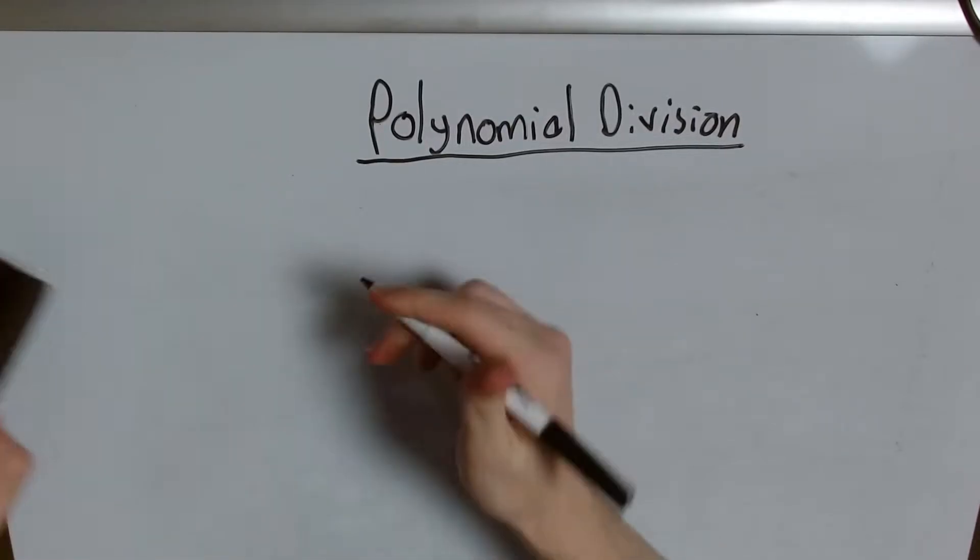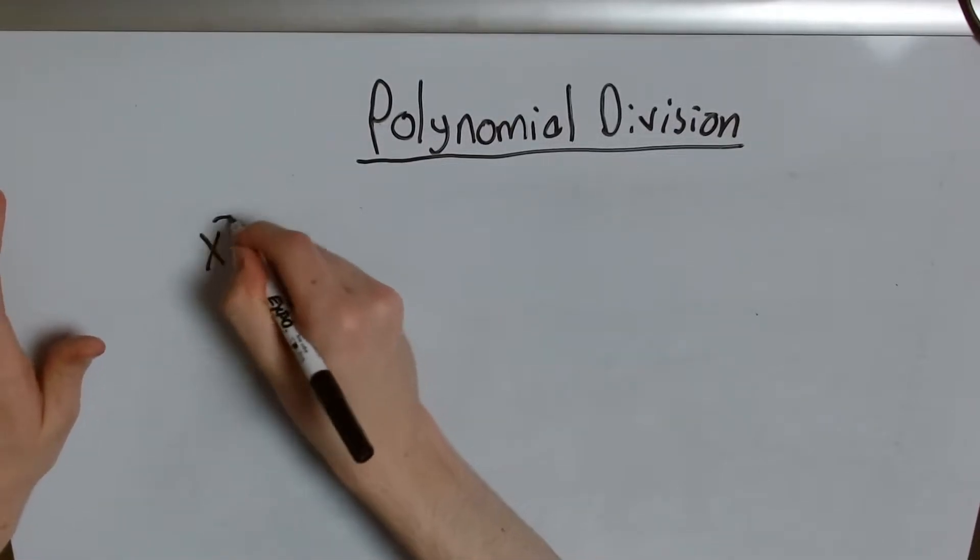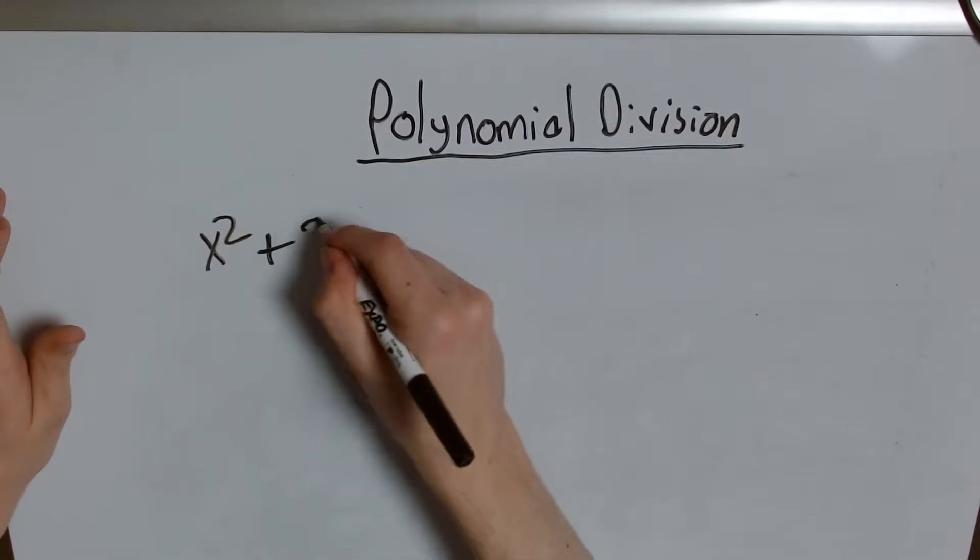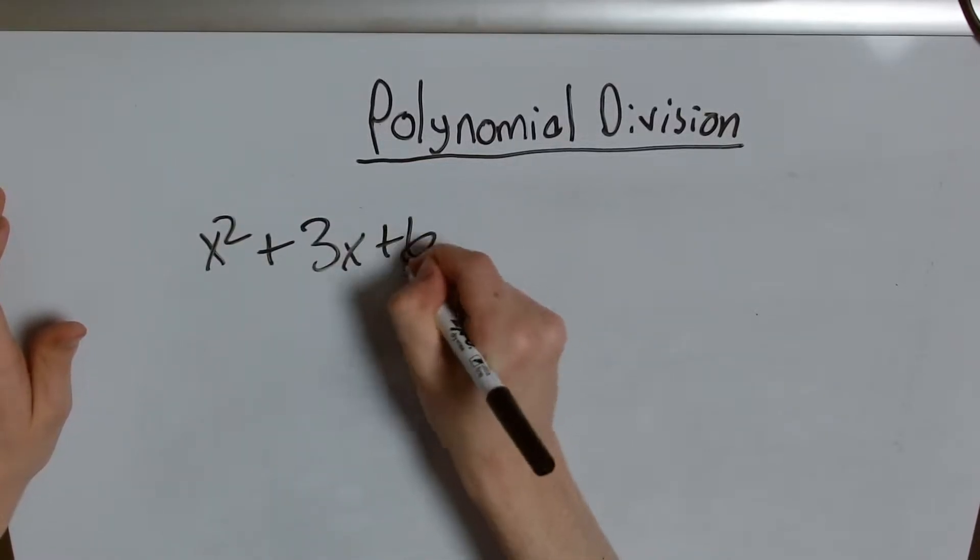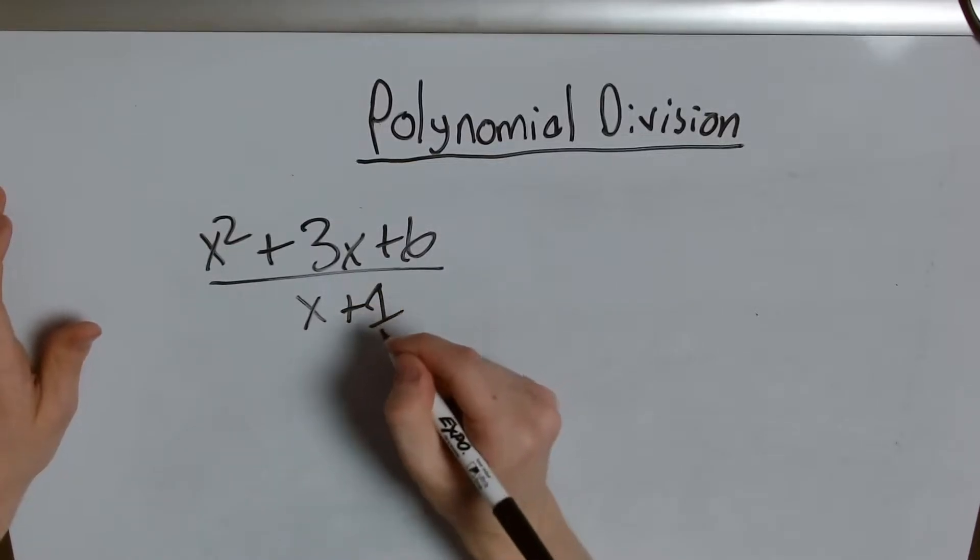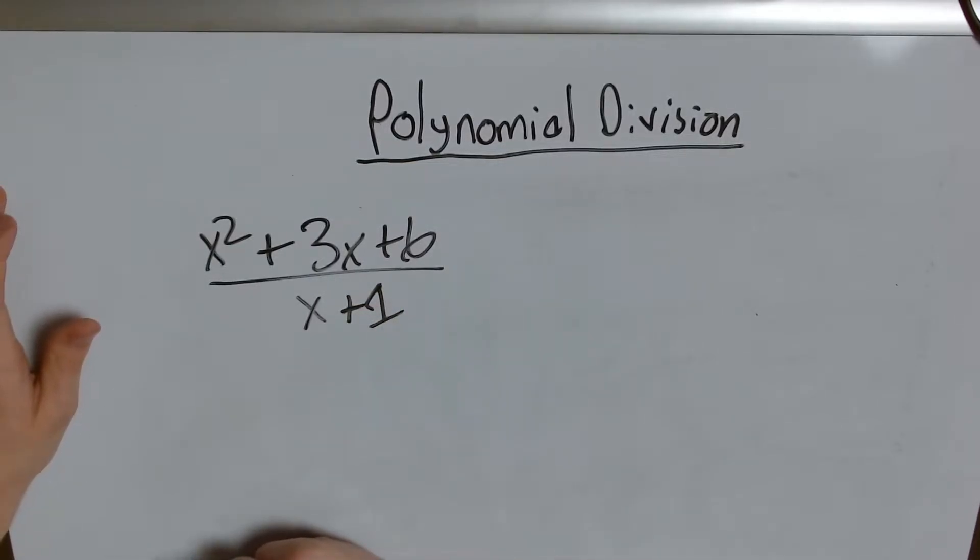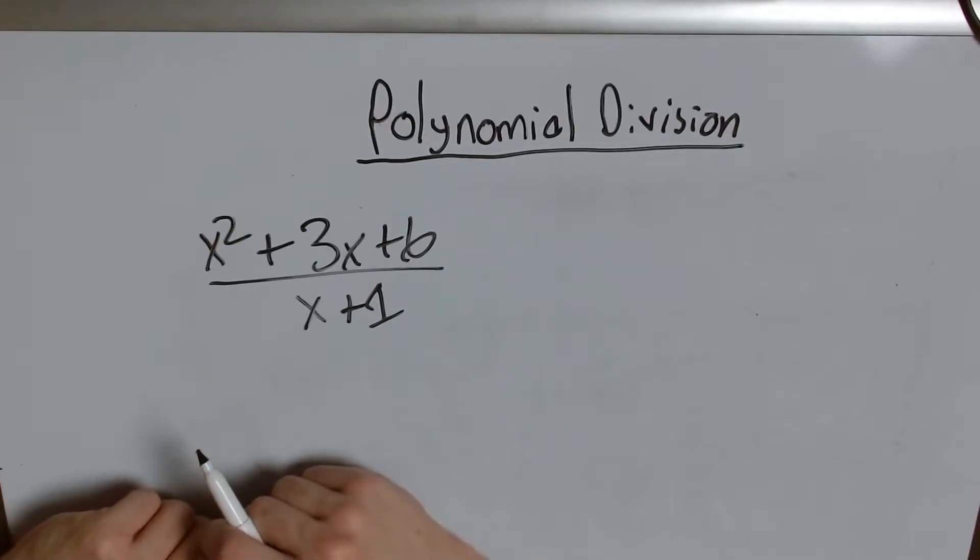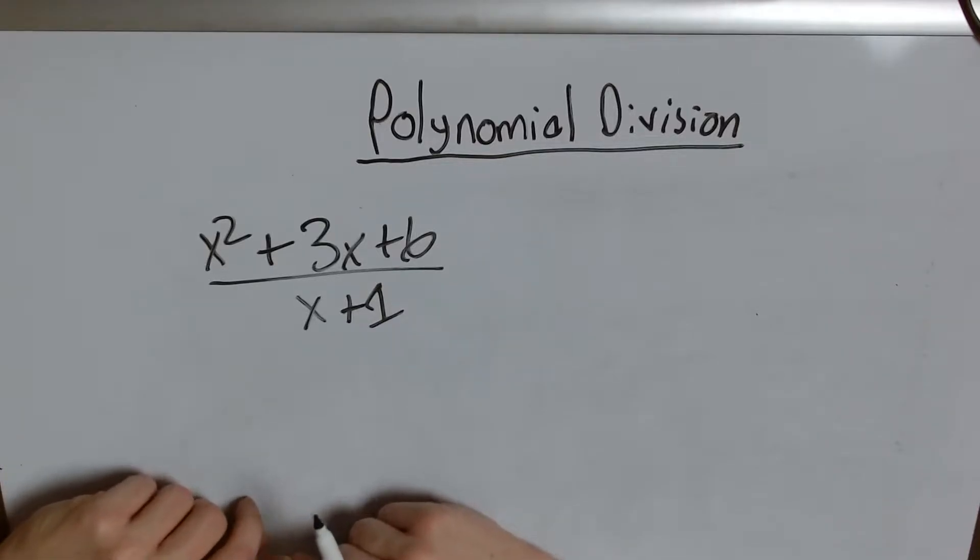So say I had something like this: x squared plus 3x plus 6 divided by x plus 1. What do I do here? Not much. This is a difficult nut to crack. But I still have one trick up my sleeve: Long division.